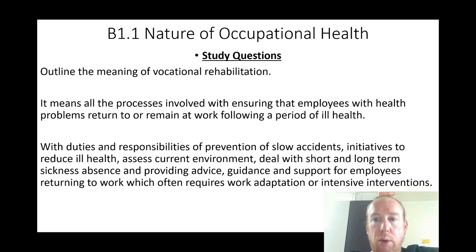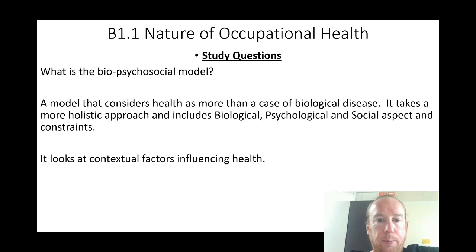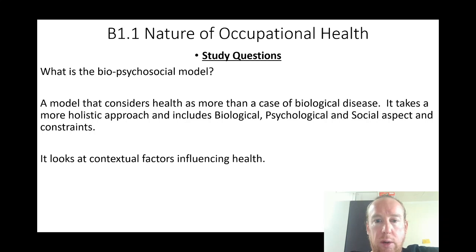What is the bio-psycho-social model? It is a model that considers health as more than a case of biological disease. It takes a more holistic approach and includes biological, psychosocial, and social aspects and constraints. It looks at contextual factors influencing health.